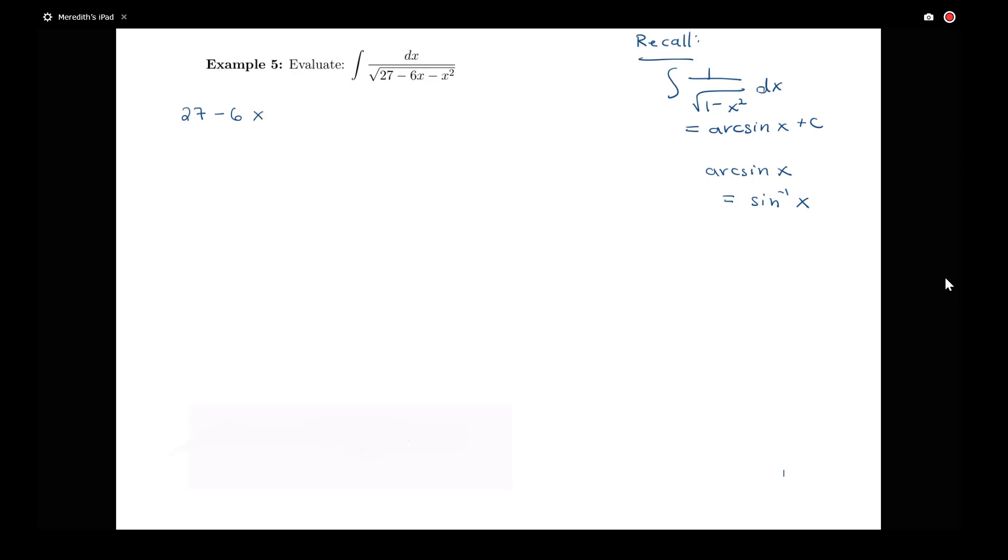So if I write down 27 minus 6x minus x squared, in order to complete the square on this, I'm going to first factor out that negative. So I'm going to have positive x squared plus 6x and then minus 27. So in our algorithm for completing the square here, I'm going to take x and then half of my middle term. So I'm going to have x plus 3 and then square that and then I'm going to need some sort of correction piece. So notice that if I expand this part out, x plus 3 squared would give me back x squared plus 6x plus a constant term of 9.